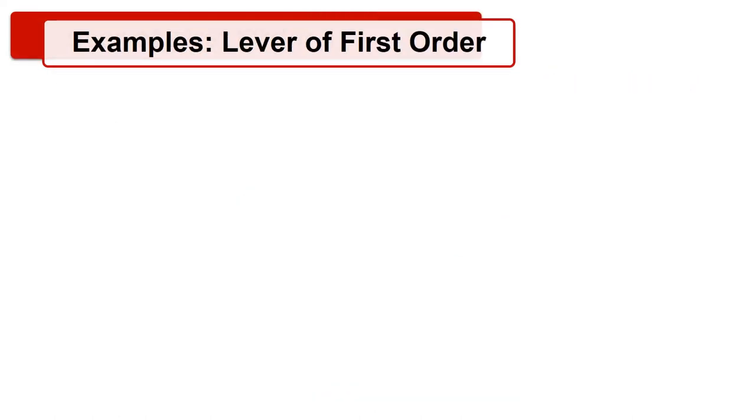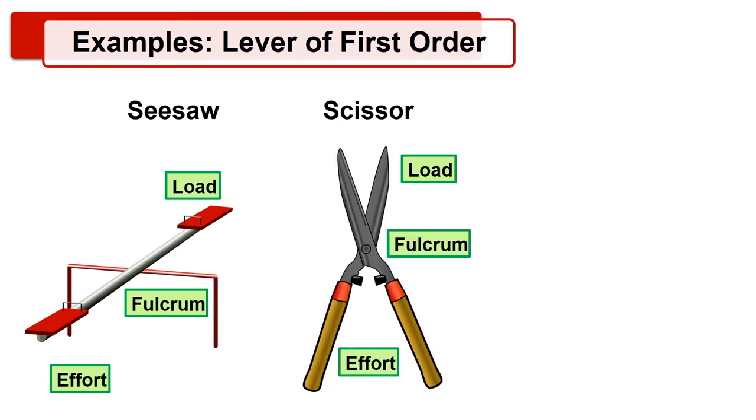Examples of the lever of first order are seesaw, scissor, and crowbar.